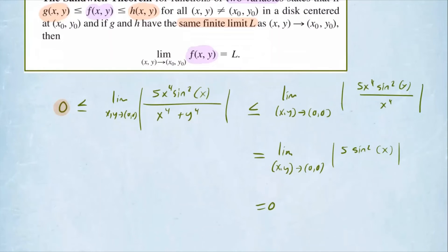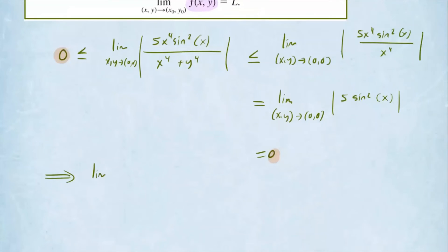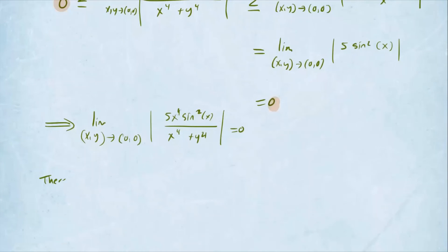This is bigger than 0, and now it's less than 0. Therefore, the limit of the function we were looking at also has to be 0. So we can say that this implies that the limit as (x, y) approaches (0, 0) of the absolute value of 5x⁴sin²(x) over x⁴ + y⁴, this is going to be 0, and now we can say that, therefore,